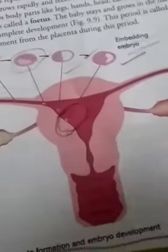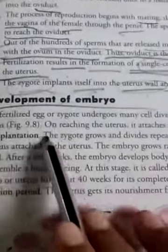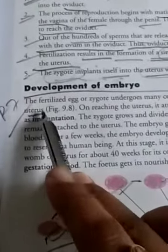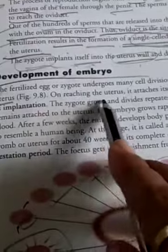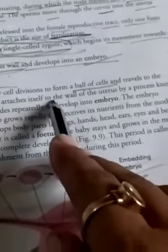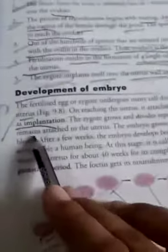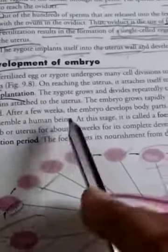The fertilized egg or zygote undergoes many cell divisions to form a ball of cells, as you can see in the diagram, and travels to the uterus. On reaching the uterus, it attaches itself to the wall of the uterus by a process known as implantation. The attachment of the embryo to the wall of the uterus is known as implantation.